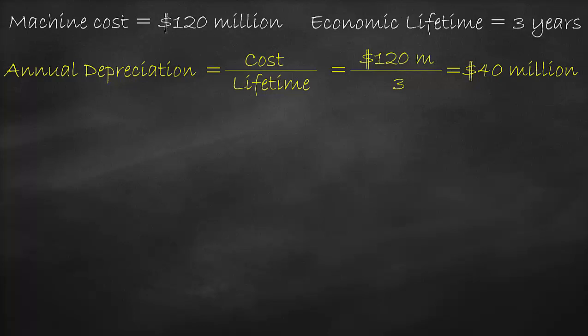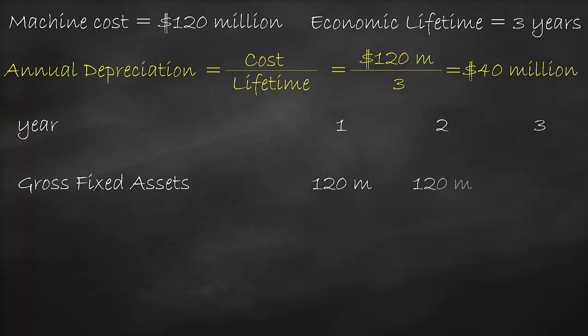The economic lifetime of this machine is 3 years, so we will write year 1, 2, and 3. The cost of the machine is $120 million, which is called gross fixed assets. So gross fixed asset is $120 million in year 1, 2, and 3.